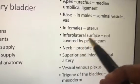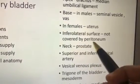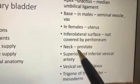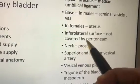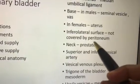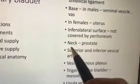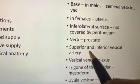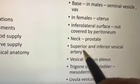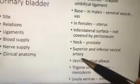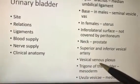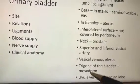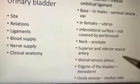Every student should write that the inferolateral surface is not covered by peritoneum — this is a very important point. Next to the inferolateral surface, you have the levator ani muscle and the pelvic diaphragm. The neck has the prostate. Blood supply is from the superior vesical and inferior vesical arteries — vesical means bladder. For venous drainage, you have the vesical venous plexus, which communicates with Batson's venous plexus of the vertebral column.